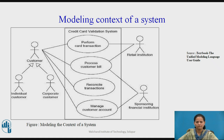For example, the figure shows the context of a credit card validation system with an emphasis on the actors that surround the system. You will find customers, of which there are two kinds: individual customer and corporate customer. These actors are the roles that humans play when interacting with the system. In this context, there are also actors that represent other institutions, such as retail institution — with which a customer performs a card transaction to buy an item or a service — and sponsoring financial institution, which serves as the clearing house for the credit card account. In the real world, these latter two actors are likely software-intensive systems themselves.